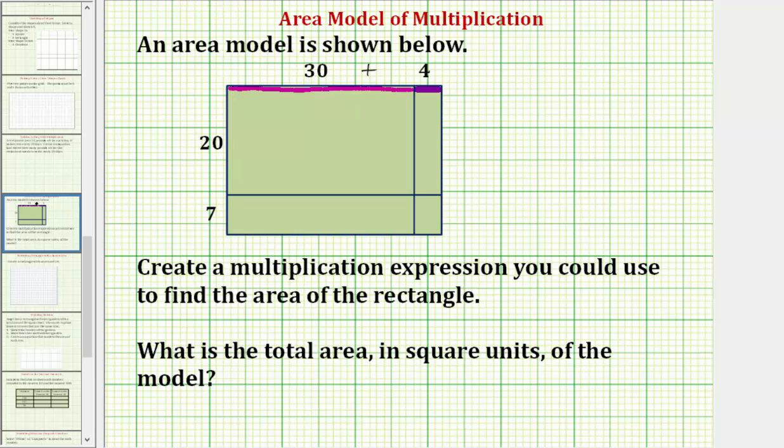And now for this side, this length is 20 units and this length is seven units. And therefore the total length of this side would be 20 plus seven, or 27 units.